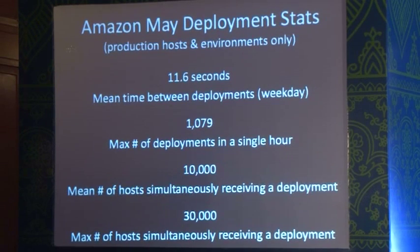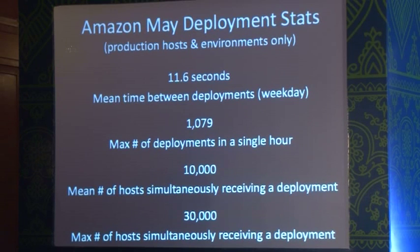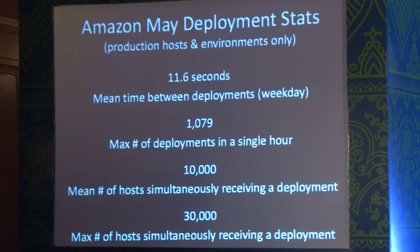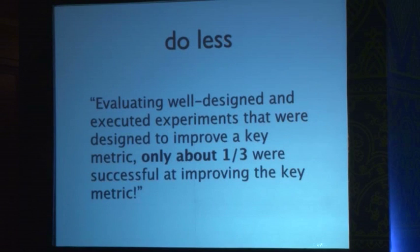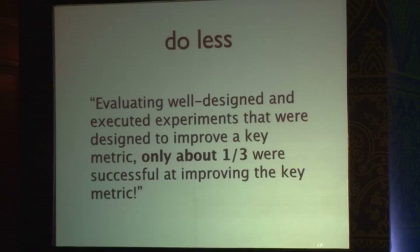Anytime they have a feature idea, they run an experiment on a very small percentage of users to find out if that feature idea is actually going to improve the top-line revenue metrics they care about. Based on doing a large number of experiments, Ronnie Kohavi — the guy who invented Amazon's A/B testing framework, who now works at Microsoft building their A/B testing framework — has this observation: evaluating well-designed and executed experiments designed to improve a key metric, only about one-third were successful. What that means is two-thirds of the software features that we build provide zero or negative value to users. These are good ideas, features that people thought were slam-dunk ideas, and two-thirds of them delivered zero or negative value.